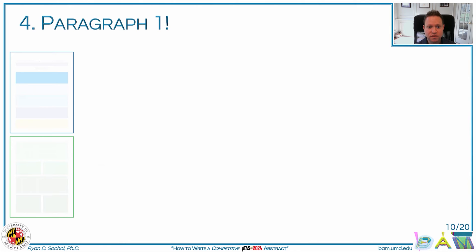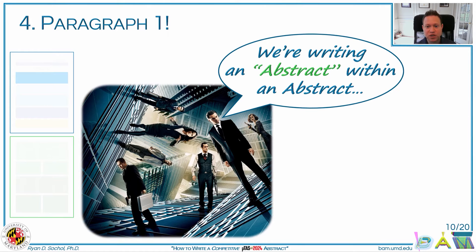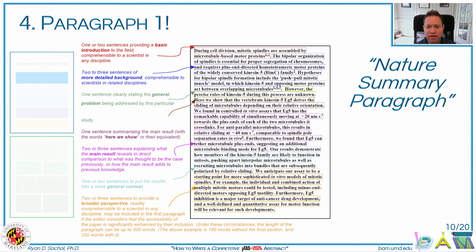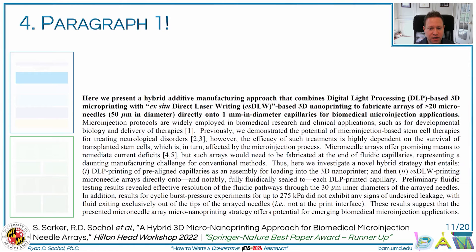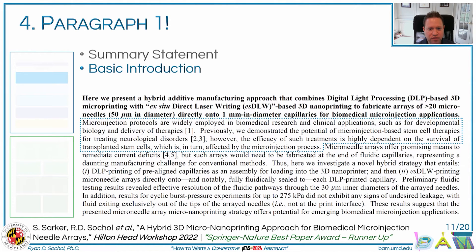The next most important part is paragraph one of the main text. This is essentially what I'm referring to as an abstract within an abstract. I'd really recommend looking at the Nature summary paragraph format. The idea is to take that format and condense it into roughly four to five sentences, with an additional introductory overview sentence.